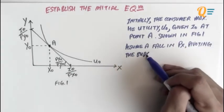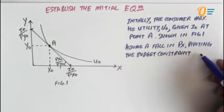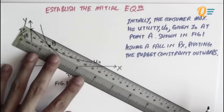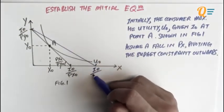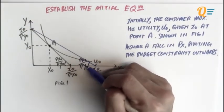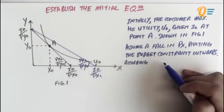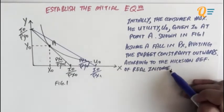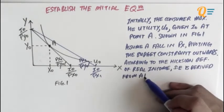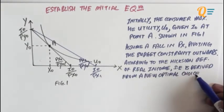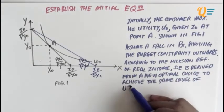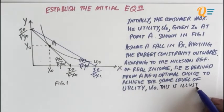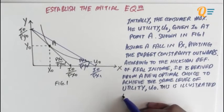Next, assume a fall in the price of X, pivoting the budget constraint outwards. I'm going to illustrate this on the graph — I'll draw a flatter budget line. According to the Hicksian definition of real income, the substitution effect is derived from a new optimal choice to achieve the same level of utility, which is U0. This is illustrated at point CH.